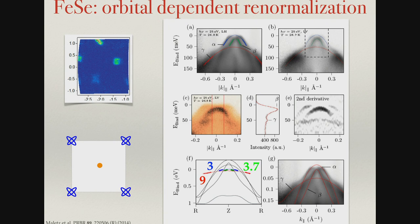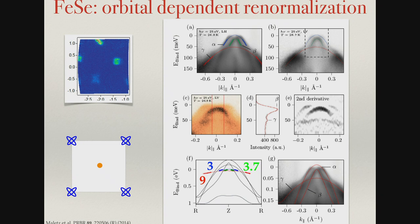The orbital renormalization effects can be orbital dependent, and this is another complication in iron-based superconductors. This is iron selenide, which has very tiny Fermi surfaces. If one looks in the center of the Brillouin zone, one realizes that the experimental values compared to the theoretical ones show large renormalization factors. Factor three is not always universal — it could be three to four, but the xy band in iron selenide is renormalized by a factor of nine. So this renormalization can be orbital dependent.